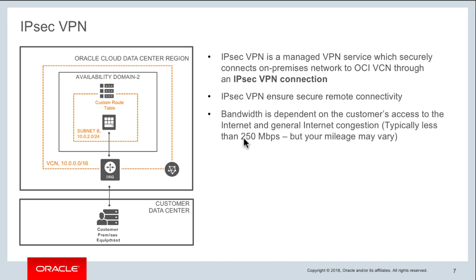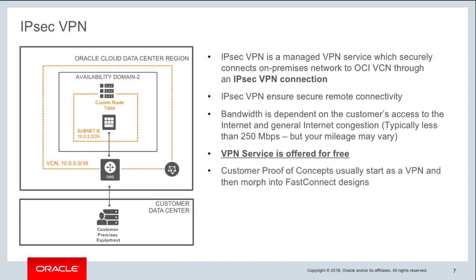With IPSec VPN the bandwidth is around 250 megabits per second, though your mileage can vary depending on your location and general internet congestion. The service itself is offered for free — there are no VPN service charges. Most customers start with a proof of concept using IPSec VPN for connectivity between on-premises and OCI, and then move to FastConnect for production workloads requiring dedicated bandwidth or dedicated latency.